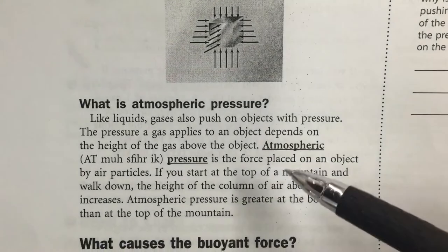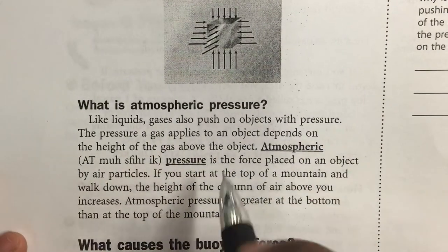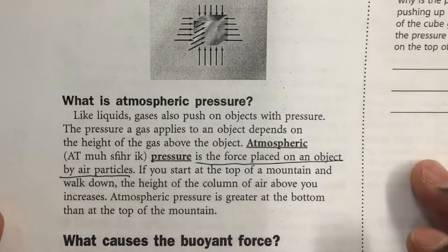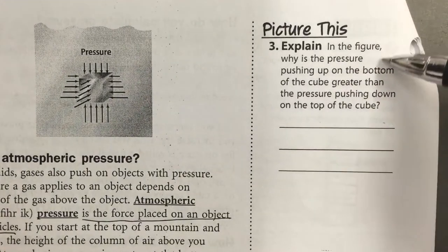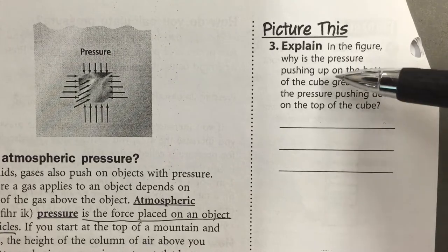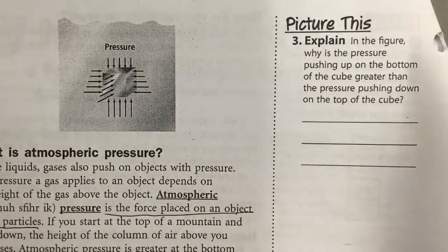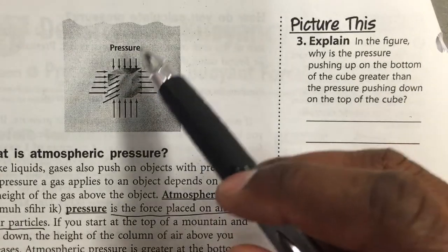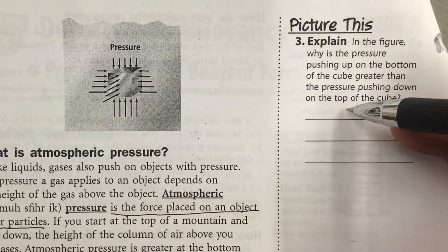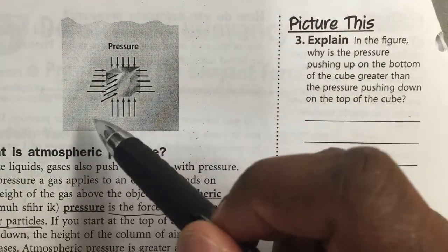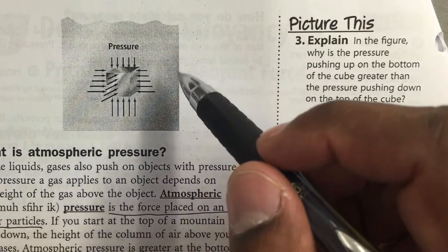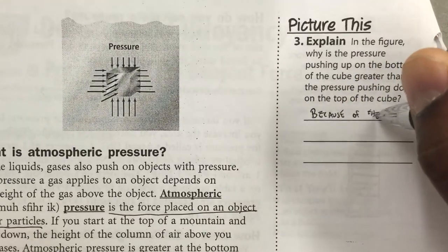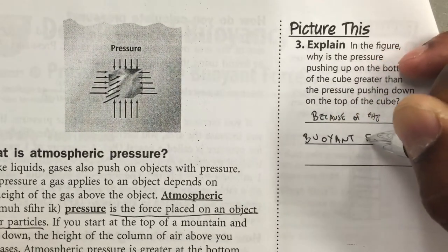Atmospheric pressure is the pressure applied by air particles. It's always around you because there's always air around you — this is the pressure that air puts on your body. In the figure, why is the pressure pushing up on the bottom of the cube greater than the pressure from other directions? That is because of the buoyant force. Even though pressure comes from every direction, the greatest net force comes from the bottom because of the buoyant force.